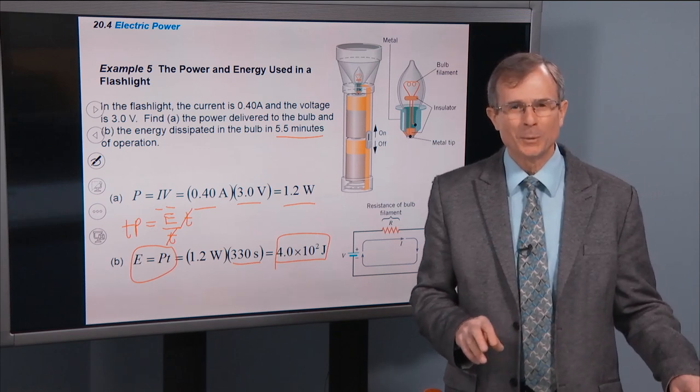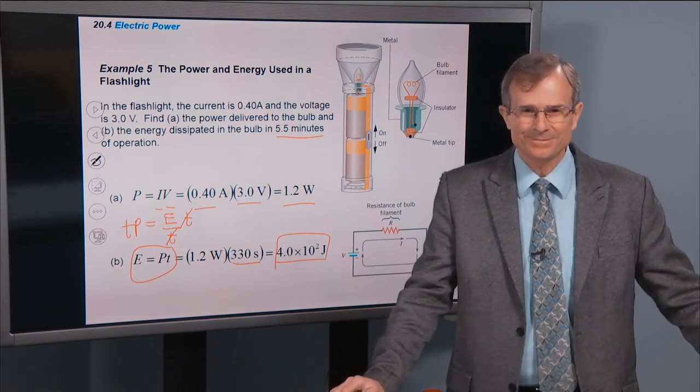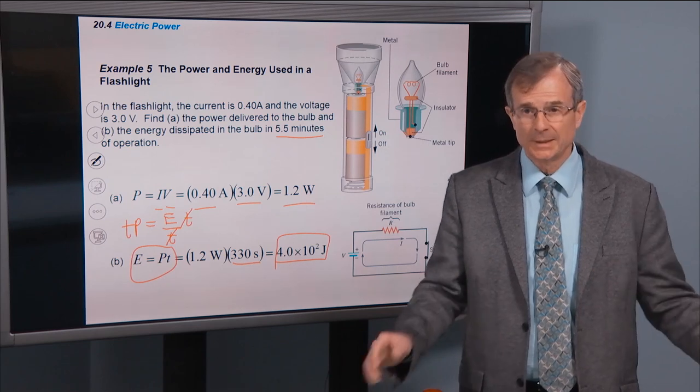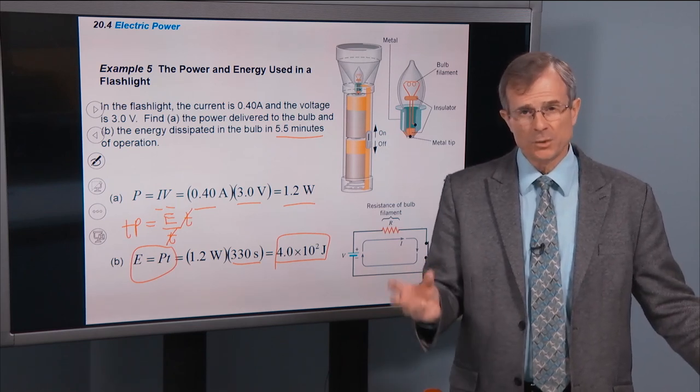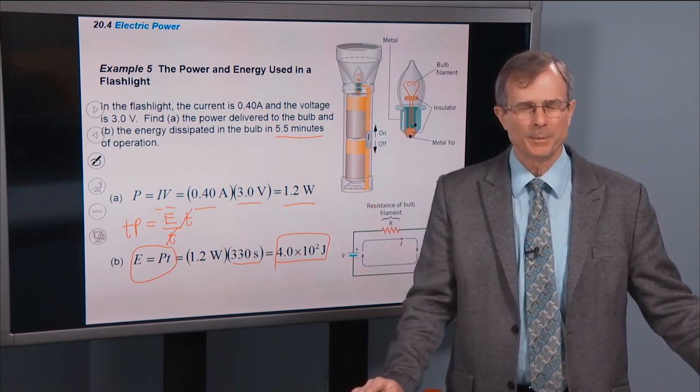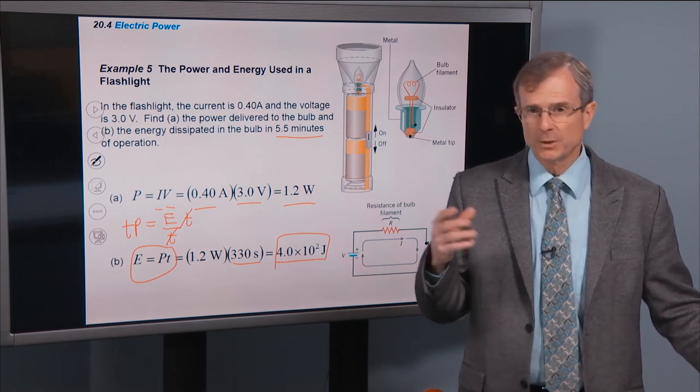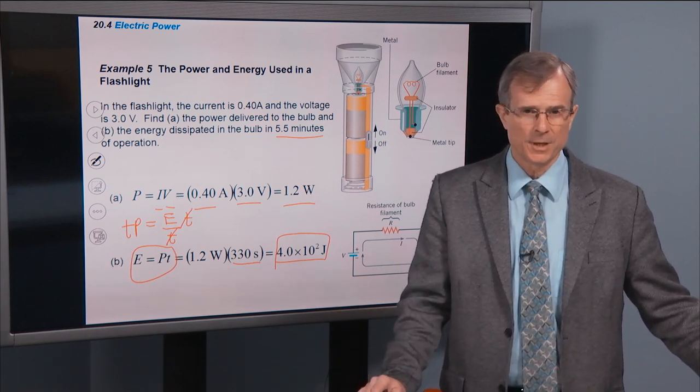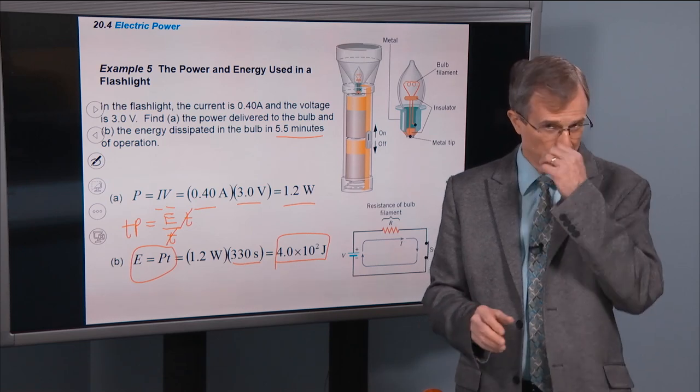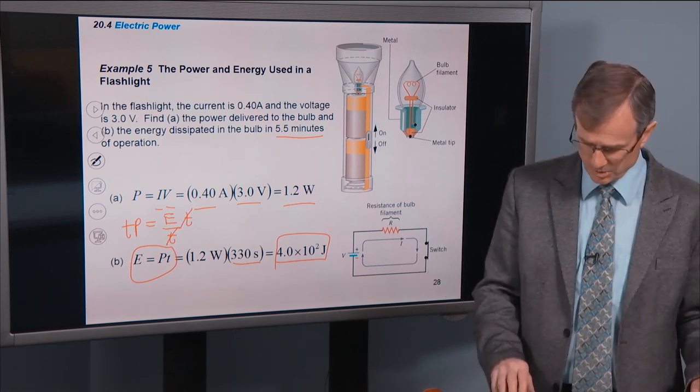Where does the energy go in the flashlight? You say, well, some of it goes into the light generated by the flashlight. Some of it goes into heat generated. The batteries heat up. The flashlight element heats up, etc.